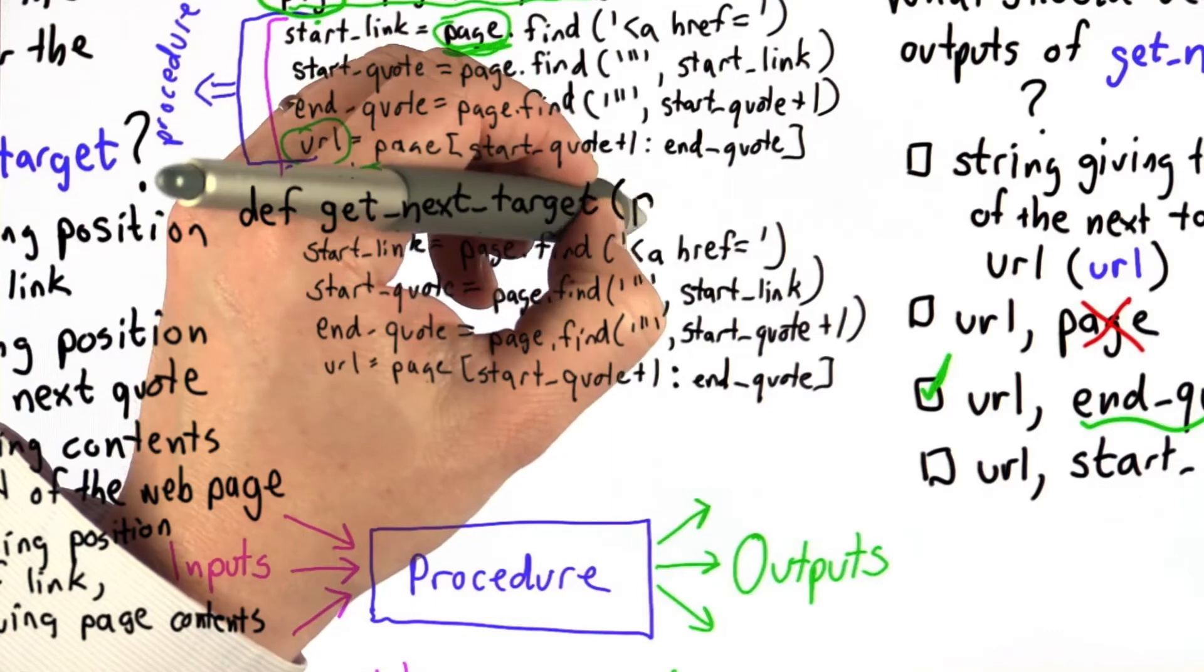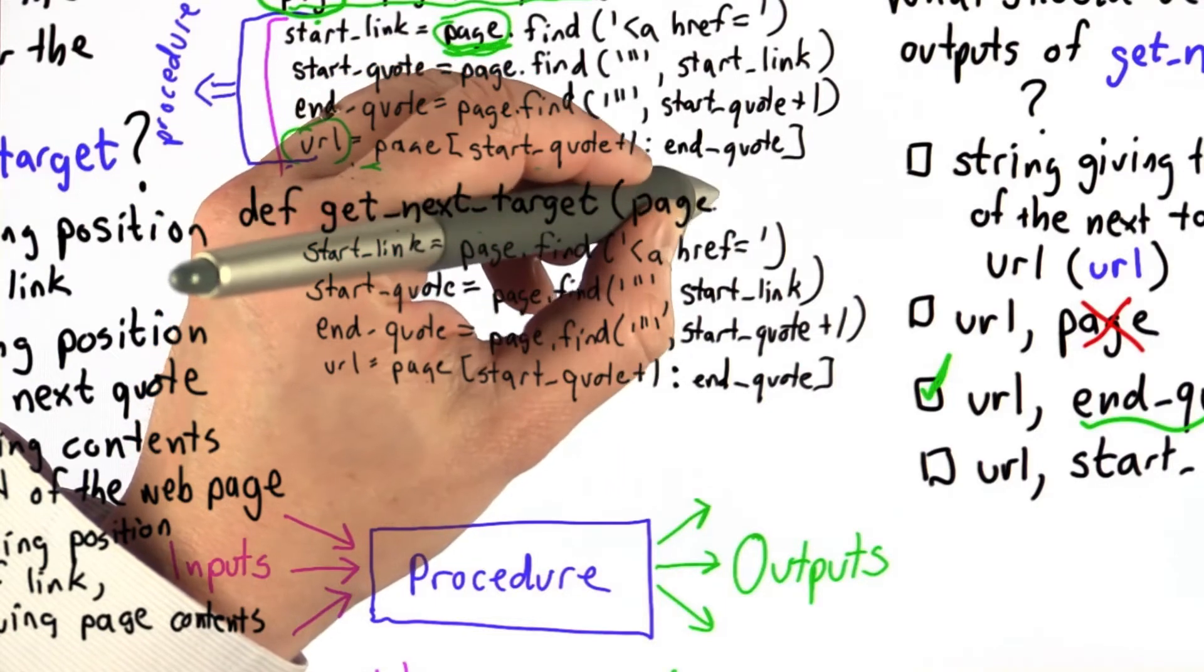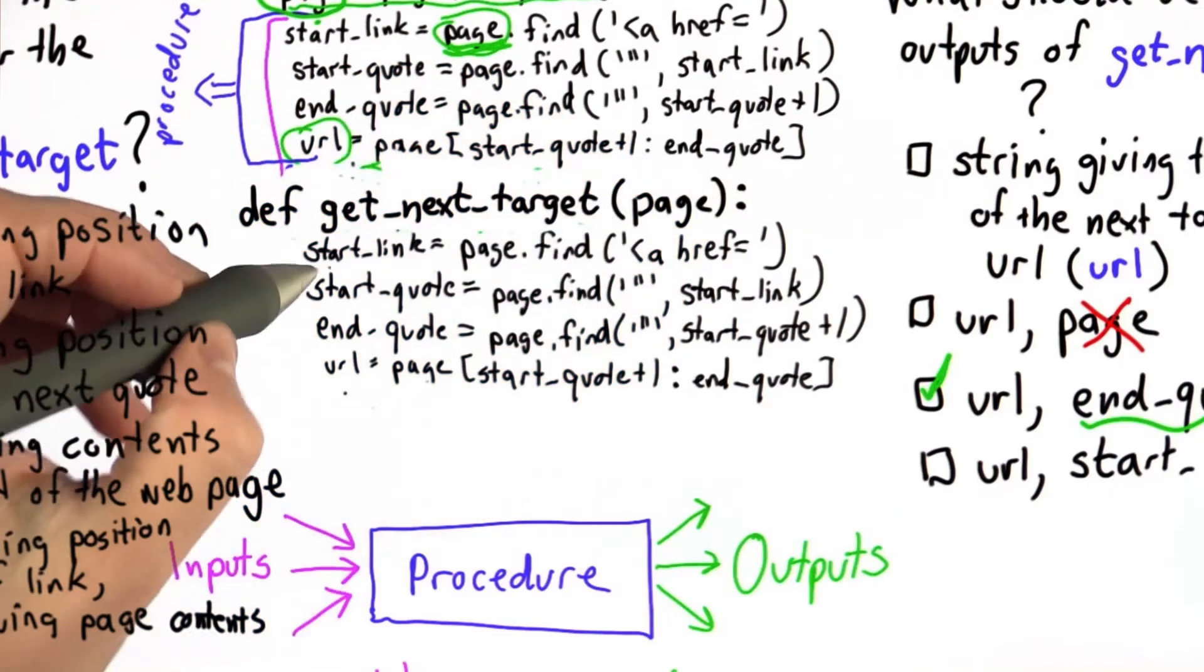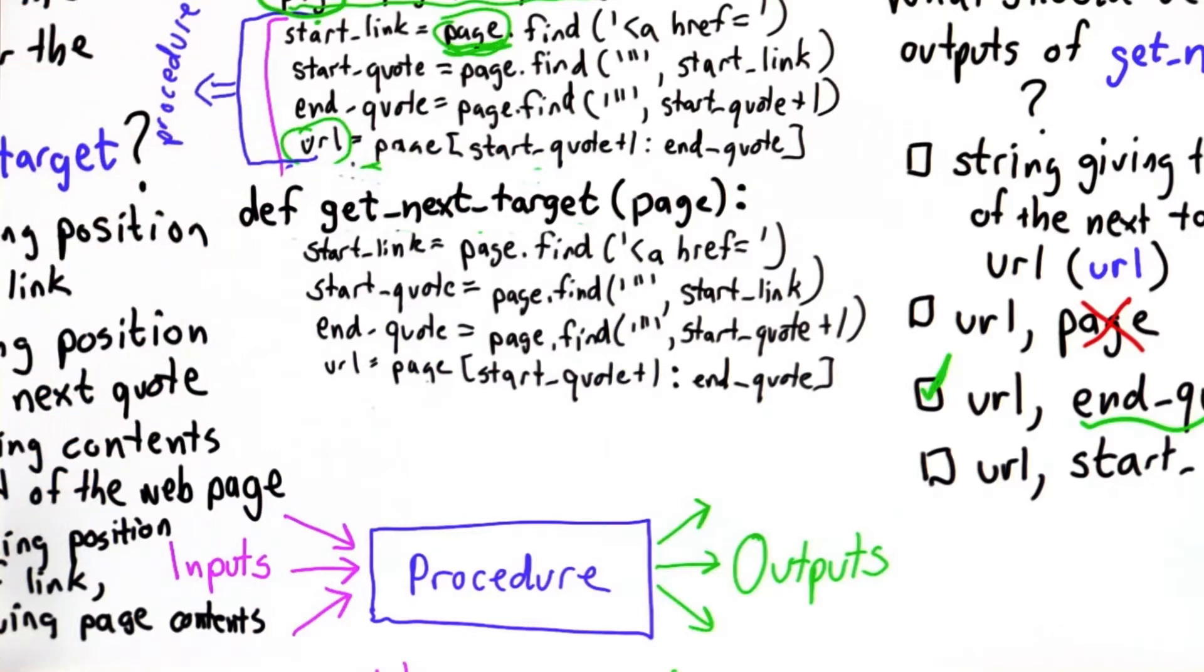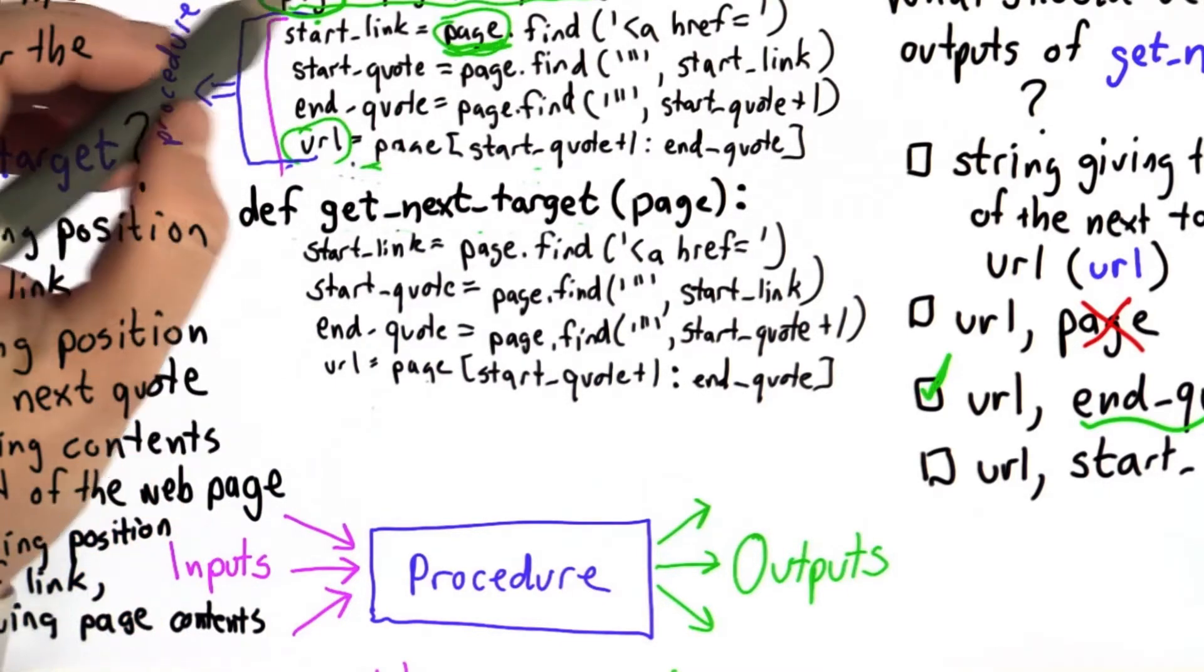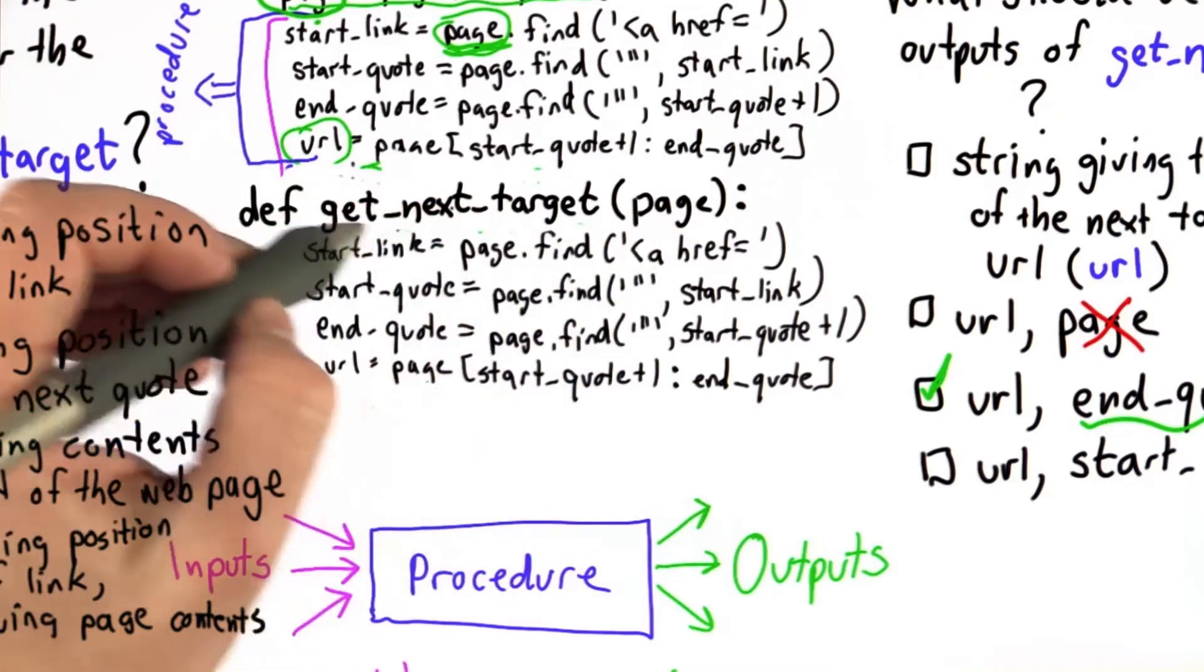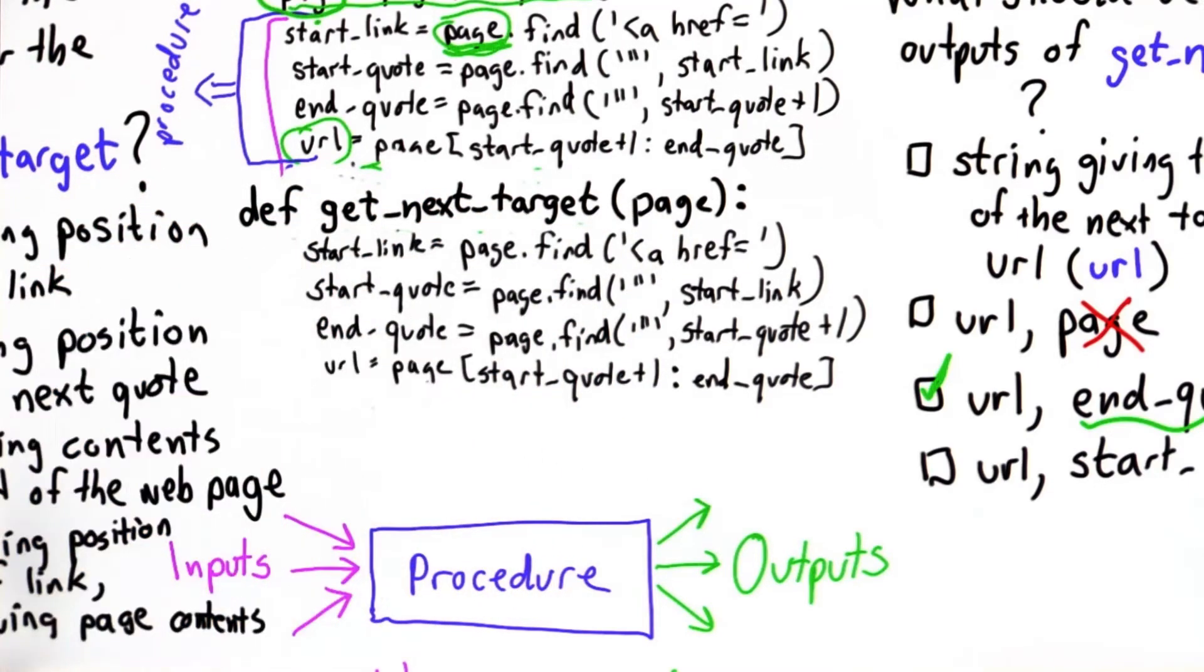So we can call that page again here. That's what we're passing in as our input. And now we have the body of the procedure. The code is exactly the same as the code we have before, but this time instead of page being whatever it was here, page is whatever we pass in as the input of the procedure.